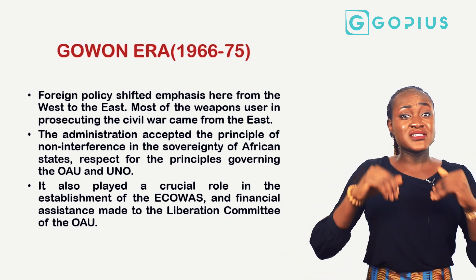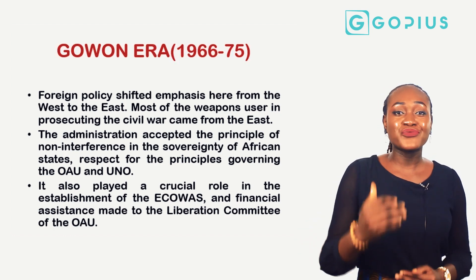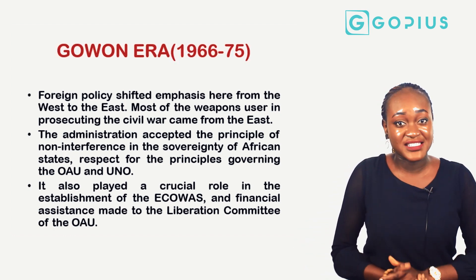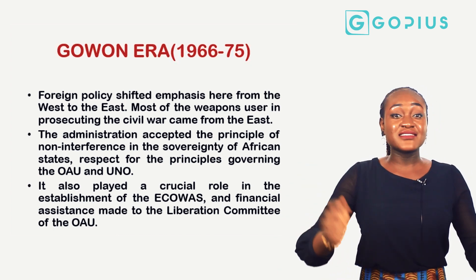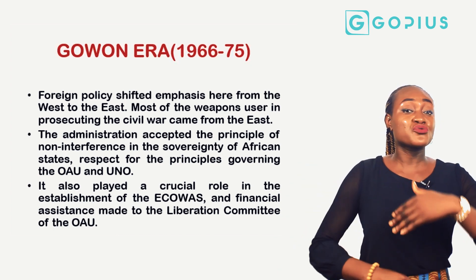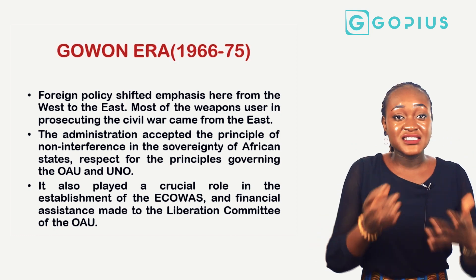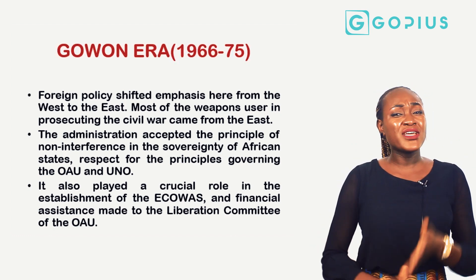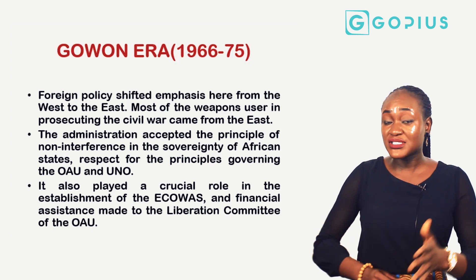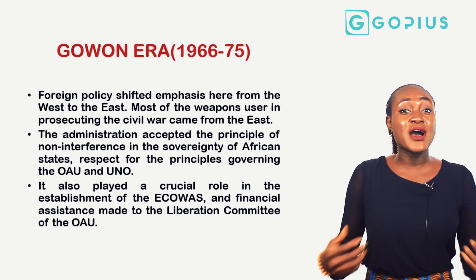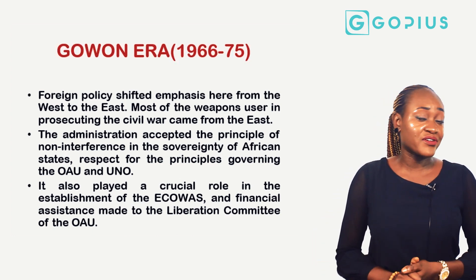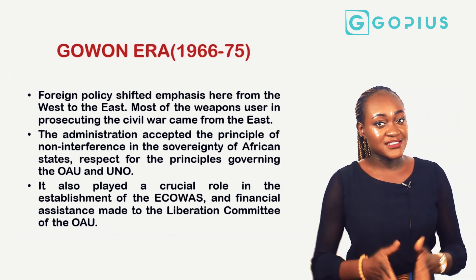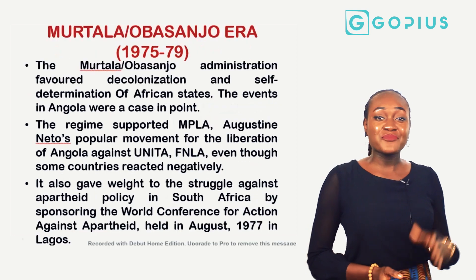The Gowon administration played a crucial role in the establishment of ECOWAS — the Economic Community of West African States. It also granted financial assistance to African states in need, supported Liberia through its crisis, and made many other efforts in African states.